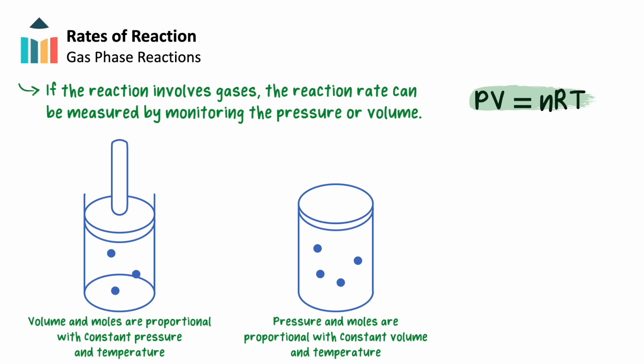If volume is constant, meaning the gas is collected in a sealed, rigid container, and the gas is cooled and heated to maintain temperature, then the change in pressure is proportional to the change in the number of moles. For example, if the number of gas molecules is doubled, the pressure inside of the container will have also doubled.